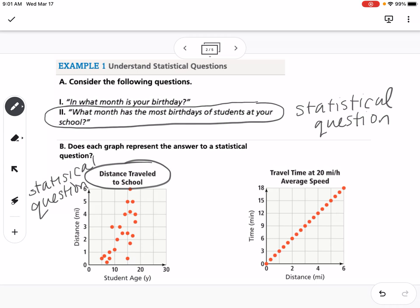On the right, we have the travel time at 20 miles per hour average speed, distance versus time. This is not a collection of data points. It's just a fact of how if we're traveling an average speed of 20 miles per hour, how much time and distance. This would not be a collection of answers. Therefore, this would not be an answer to a statistical question.